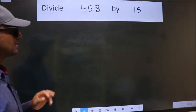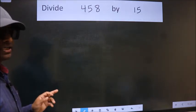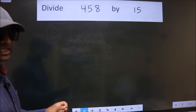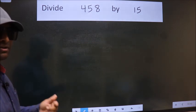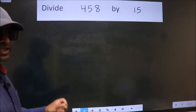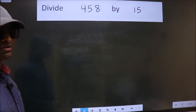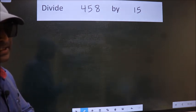Divide 458 by 15. While doing this division, many make a mistake. What is the mistake that they do? I will let you know. But before that, we should set up the problem this way.